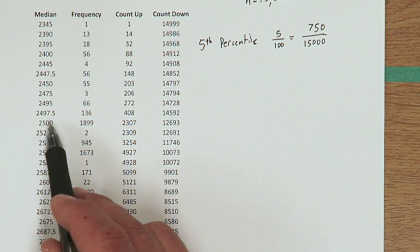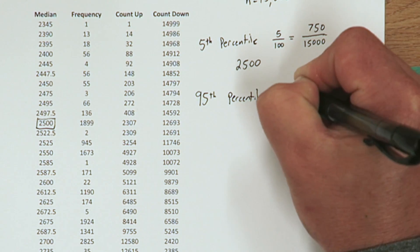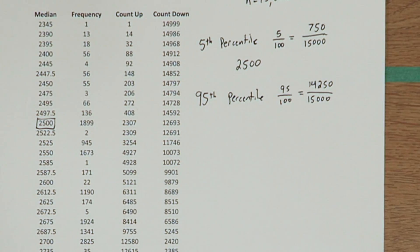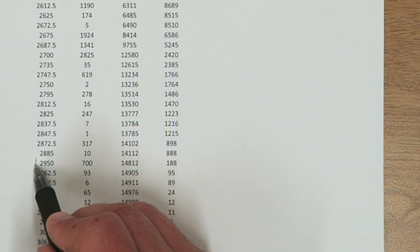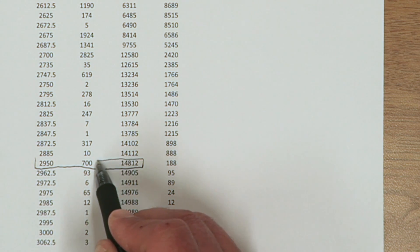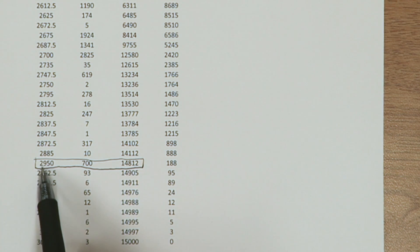Now the 95th percentile is going to be the 14,250th lowest median. So when we count up, once we get to this number, we'll find what cuts off the lower 95% of sample medians. Or another way to do this, it's going to be what cuts off the upper 5% of sample medians. So looking at my count up column again, I reach 14,250 somewhere in the 2,950 sample median. So my 5th percentile is 2,500 and my 95th percentile is 2,950.